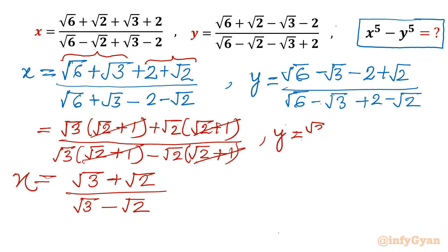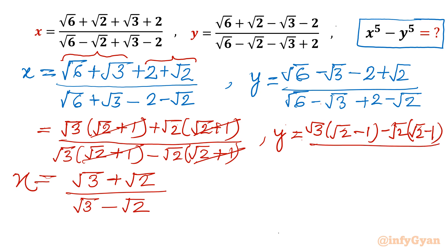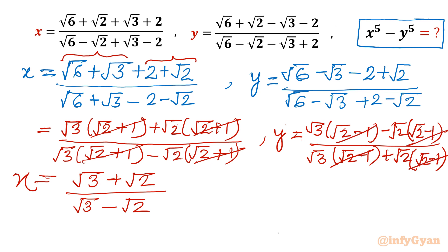Now for y, taking √3 common first gives (√2 minus 1), then taking √2 common also gives (√2 minus 1). We can cancel (√2 minus 1) from numerator and denominator. So y becomes (√3 minus √2) divided by (√3 plus √2).